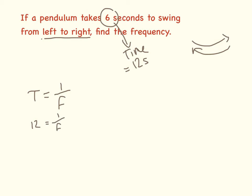These are higher tier questions so we need to do a bit of rearranging. I'll go through it all. So 12 f equals 1. So f equals 1 divided by 12, which equals 0.083 hertz.